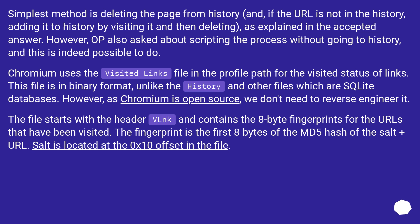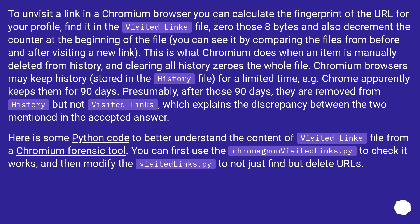Chromium uses the 'visited links' file in the profile path for the visited status of links. This file is in binary format, unlike the history and other files which are SQLite databases. However, as Chromium is open source, we don't need to reverse engineer it. The file starts with the header 'vlnk' and contains 8-byte fingerprints for the URLs that have been visited. The fingerprint is the first 8 bytes of the MD5 hash of the salt plus URL. The salt is located at the 0x10 offset in the file. To unvisit a link, you can calculate the fingerprint of the URL for your profile, find it in the visited links file, zero those 8 bytes, and also decrement the counter at the beginning of the file — you can see it by comparing the files from before and after visiting a new link.